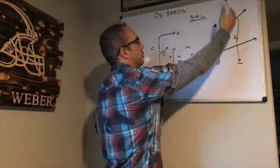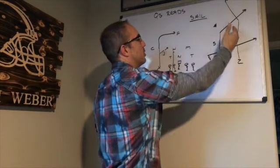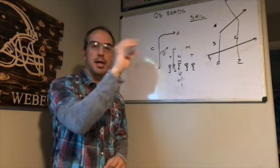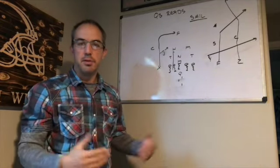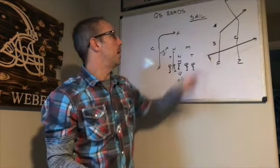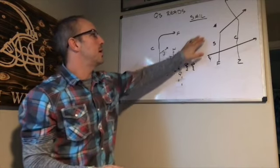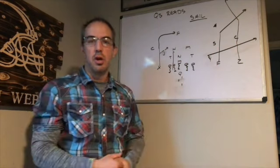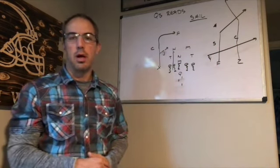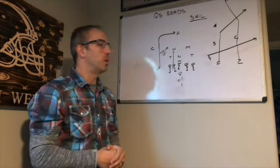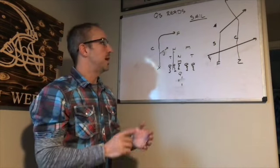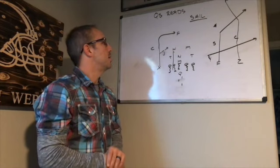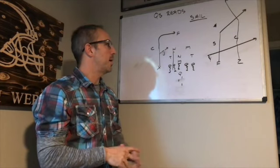That's basically our read. Generally the corner will tell you whether or not to throw the post. If he's just bailing and getting out of there, obviously we want to throw the intermediate route. Generally most of the time that safety is not going to cheat over to the corner route unless it's pure cover two, which we don't see a lot of. We see a lot of two read and a lot of quarters coverage.